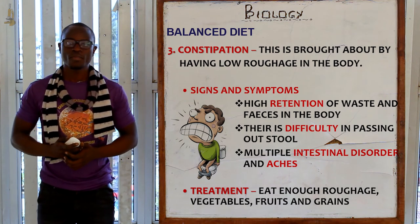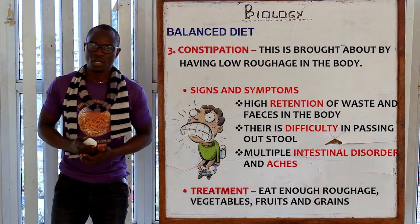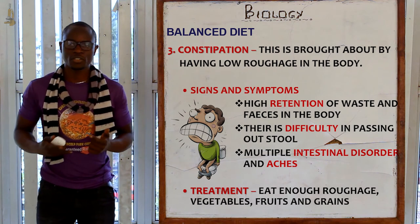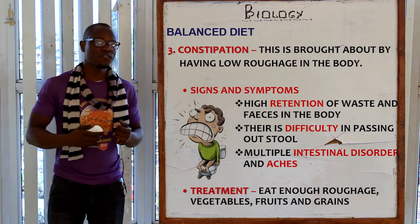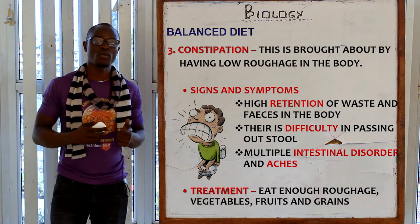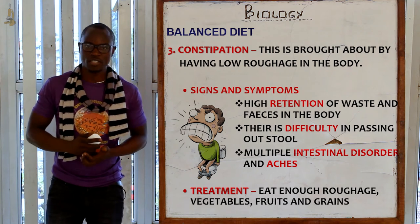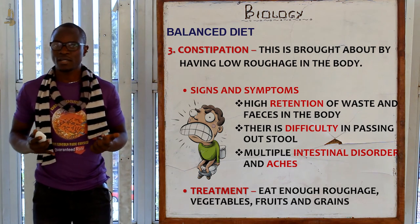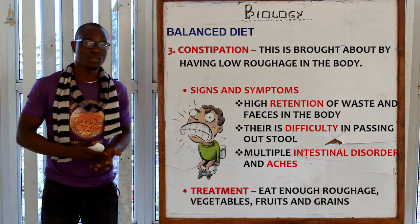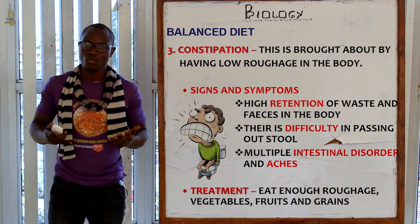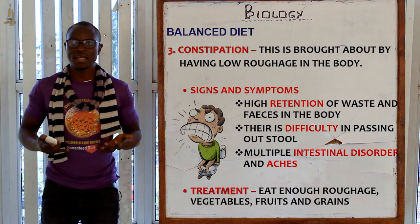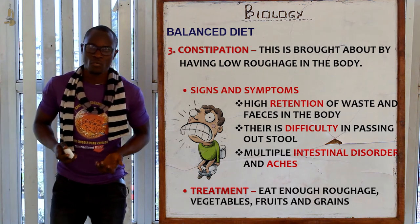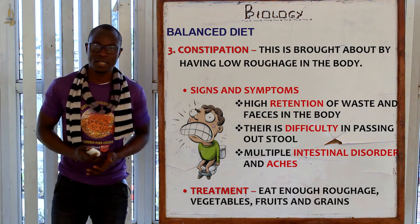Constipation can be treated by eating foods rich in roughage. Examples of such foods include vegetables, fruits, and grains.